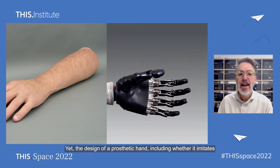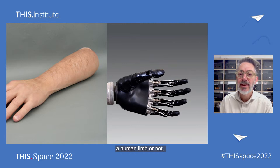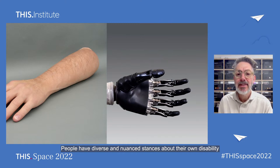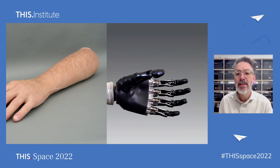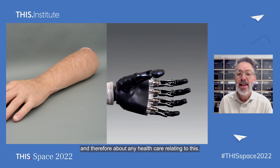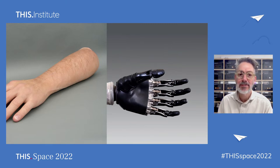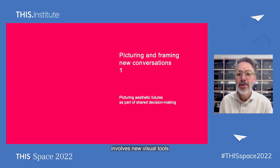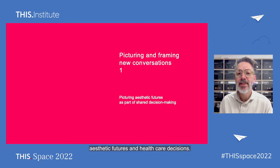The design of a prosthetic hand — including whether it imitates a human limb or not — can change what it means to wear a prosthesis in the first place. People have diverse and nuanced stances about their own disability and therefore about any healthcare relating to this. So the first instance of picturing and framing new conversations involves new visual tools to help people think through alternative aesthetic futures and healthcare decisions.